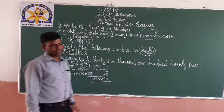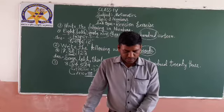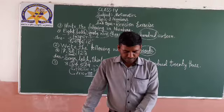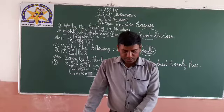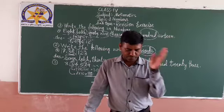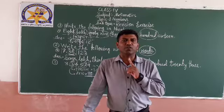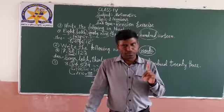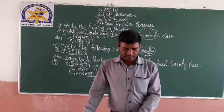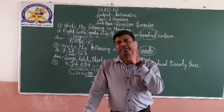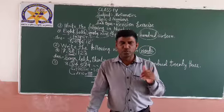Understand? Now next: write the place values of each digit of 4,73,216 and also write its expanded form. You will have to write the place value of each digit — you know how to write place value. Write it, then write the expanded form.